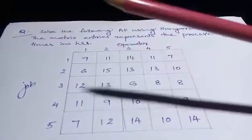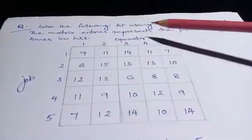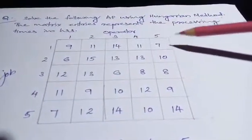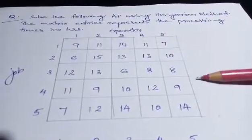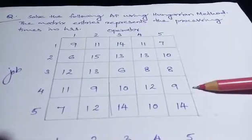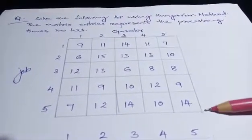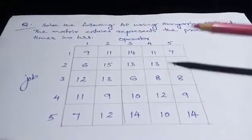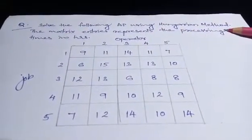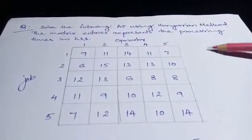This is the matrix given. There are 5 rows and 5 columns. These are the jobs and these are the operators. The values are: 9, 11, 14, 11, 7; 6, 15, 13, 13, 10; 12, 13, 6, 8, 8; 11, 9, 10, 12, 9; 7, 12, 14, 10, 14. The values given are the processing times in hours.